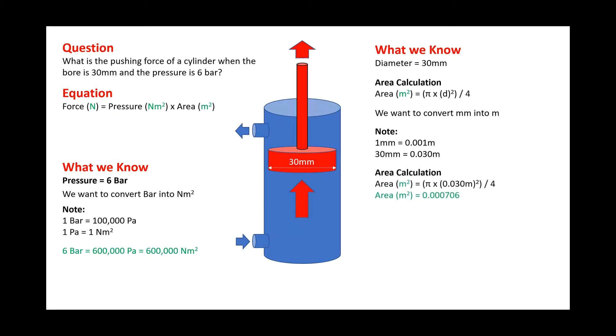If we put that back into our area calculation, we can do pi times the diameter squared divided by 4, which gives us an area of 0.000706 meters squared.